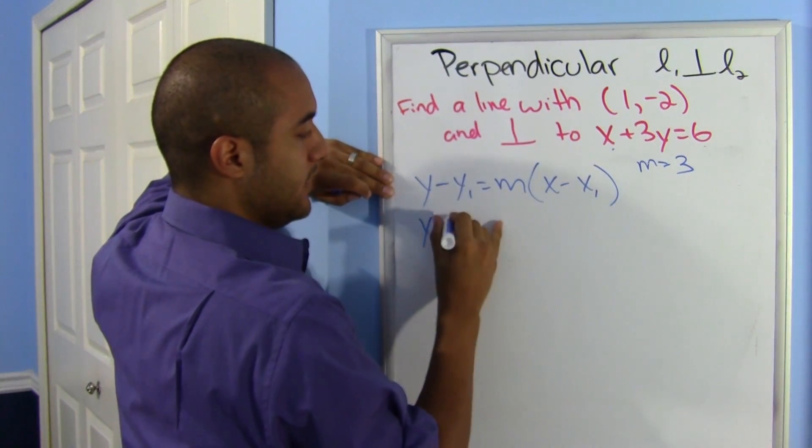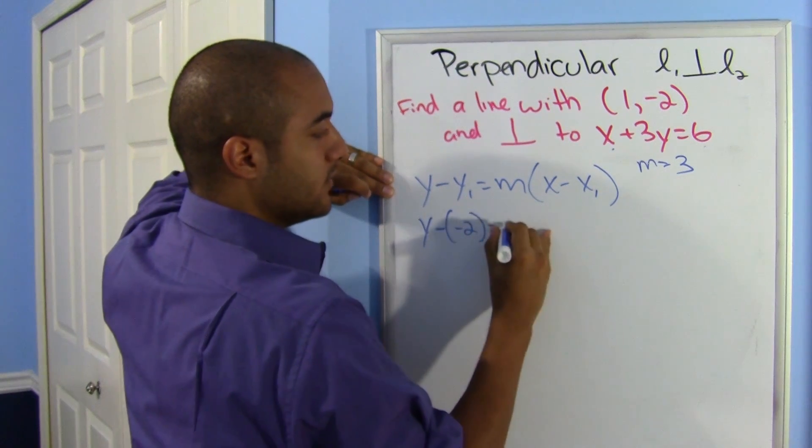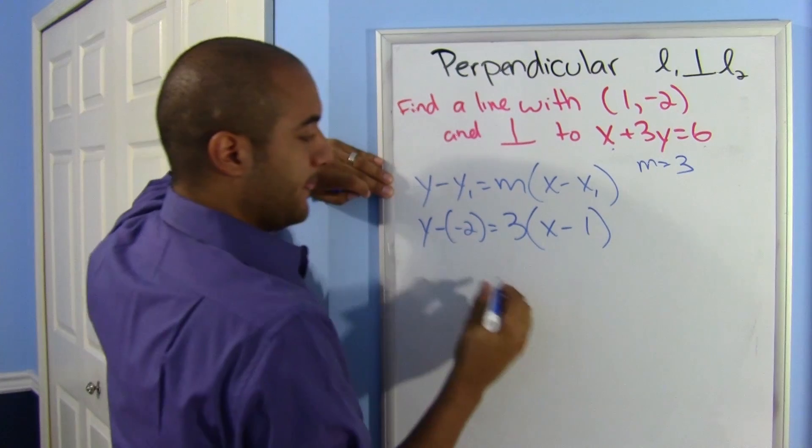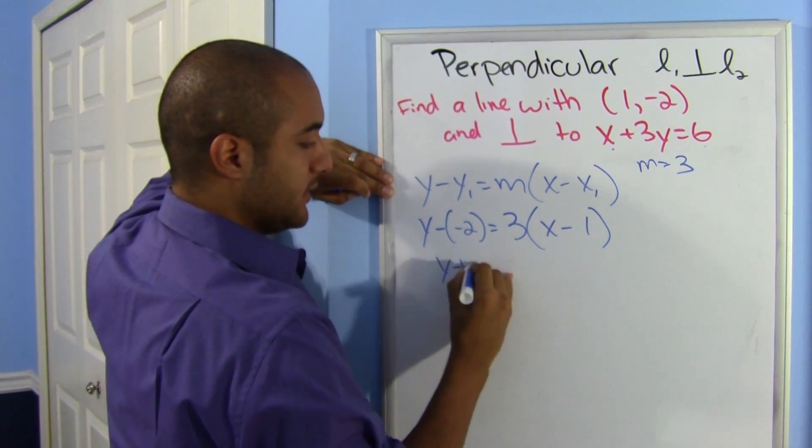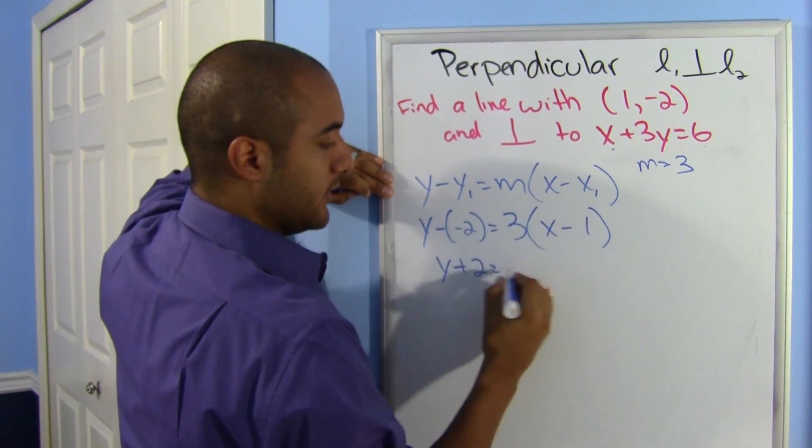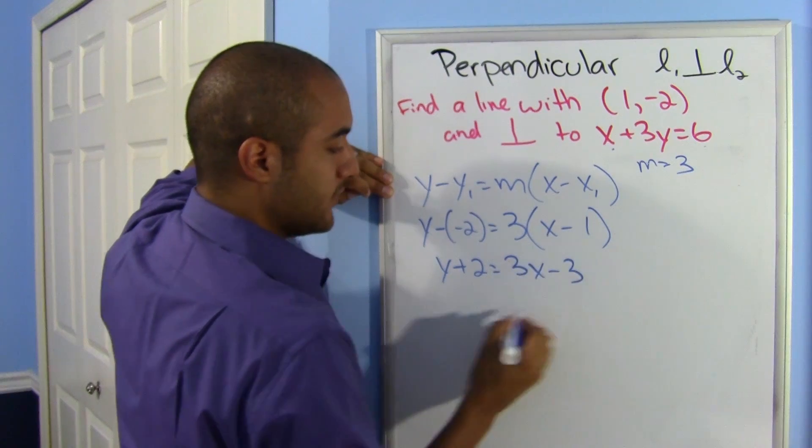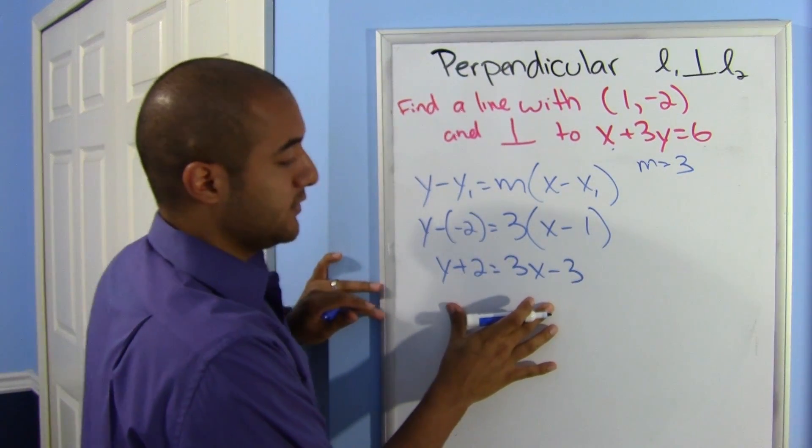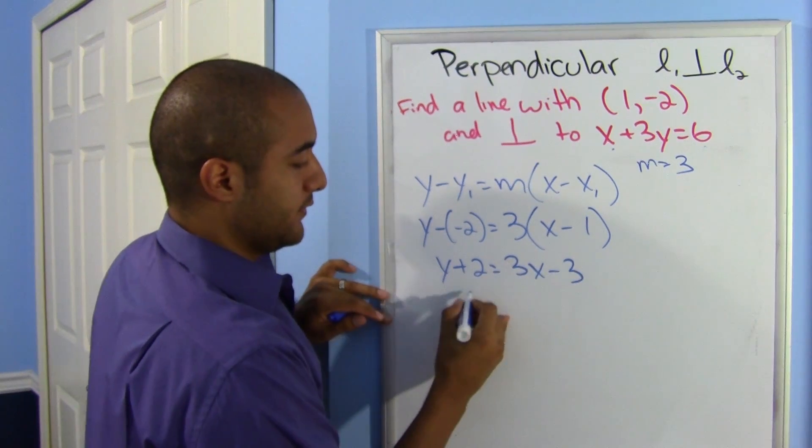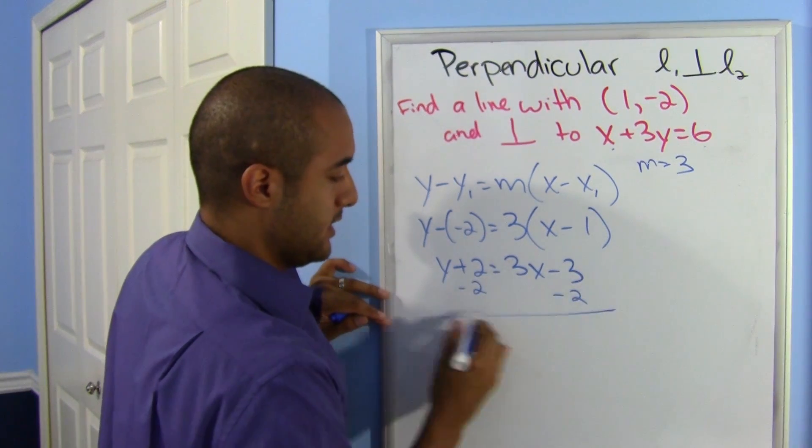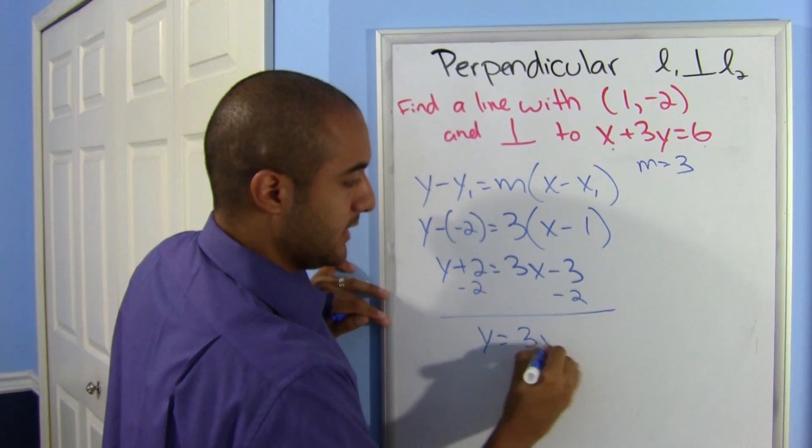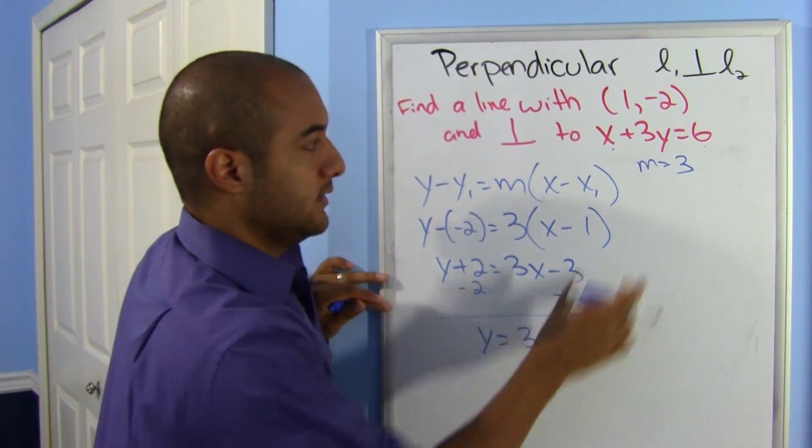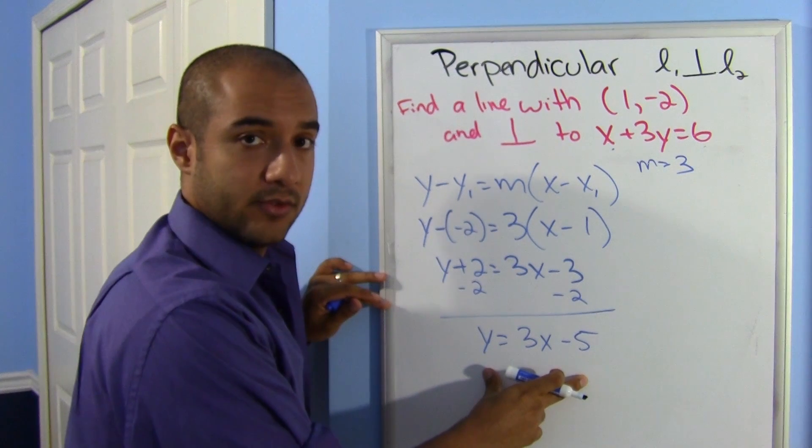That's really y plus 2 equals, distribute now, 3x minus 3. Move this up, leave it as that if your teacher lets you or move it over if you need to, and y is equal to 3x minus 5. Okay, these are now perpendicular to each other.